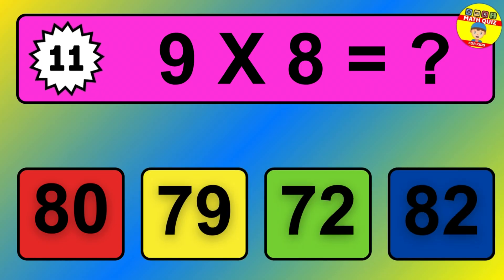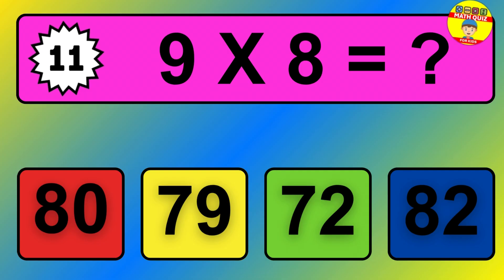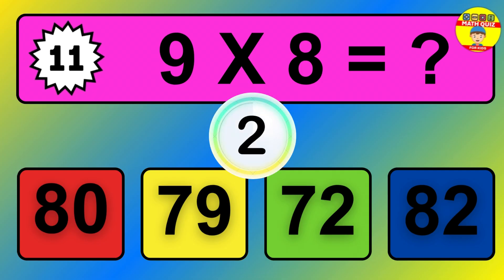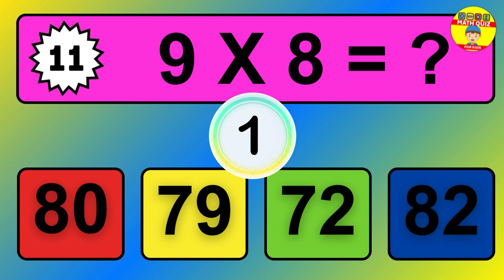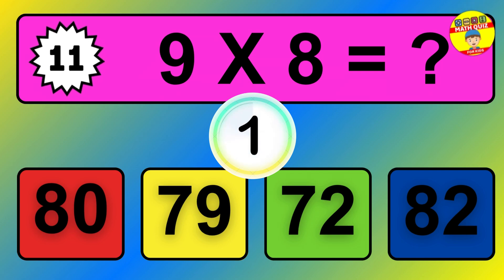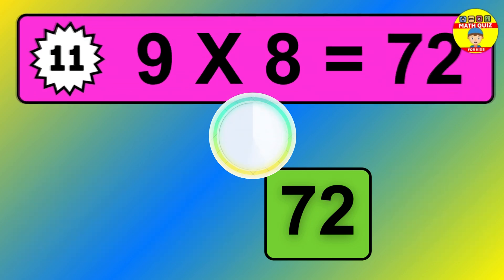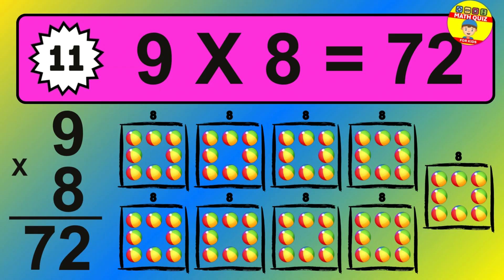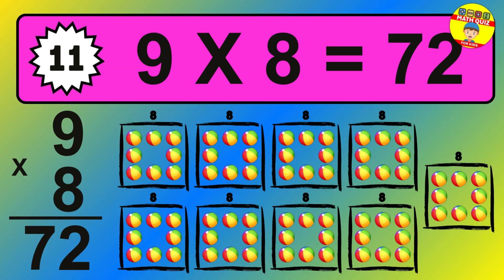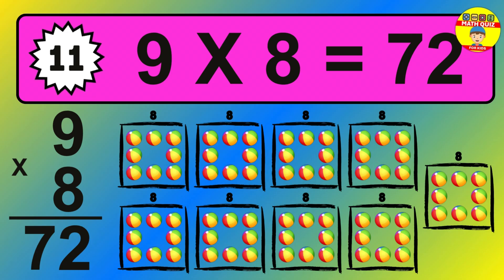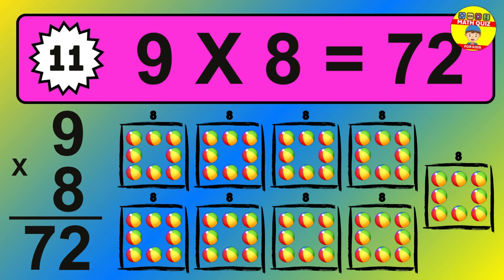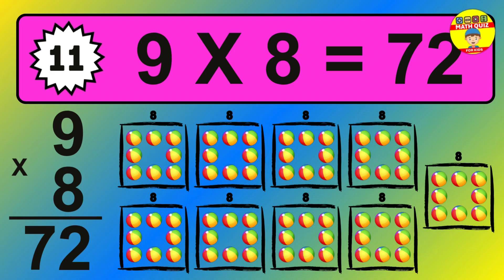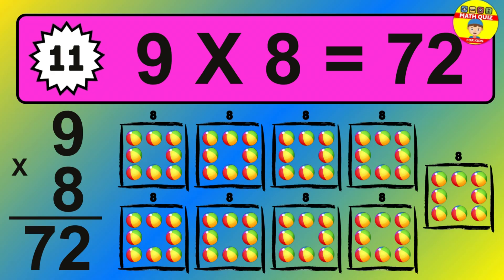Question 11. 9 times 8 equals what? The answer is 9 times 8 is 72. To calculate, we have 9 groups with 8 balls each one. So how many balls do we have? 72 balls.